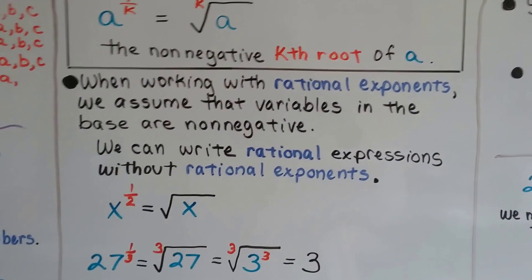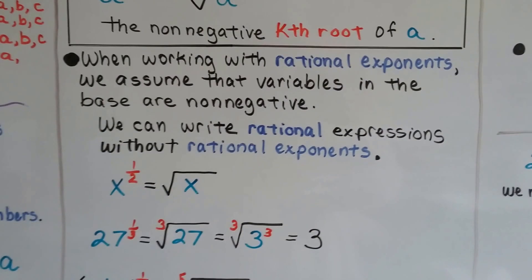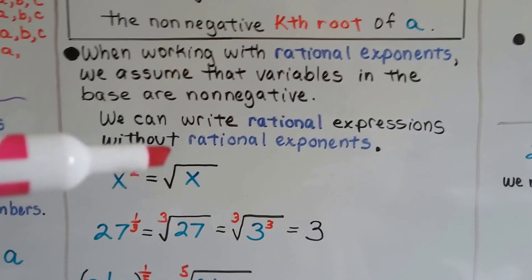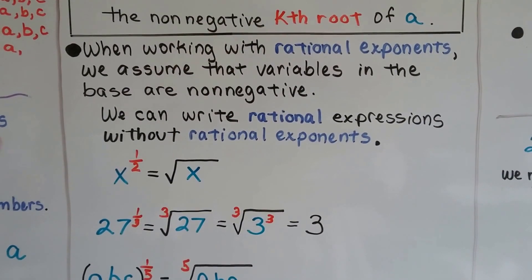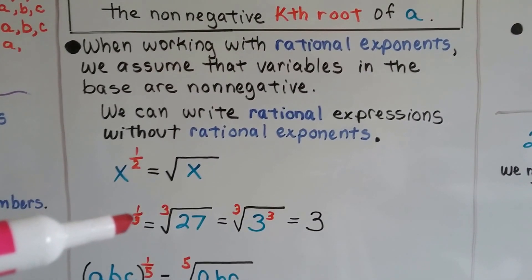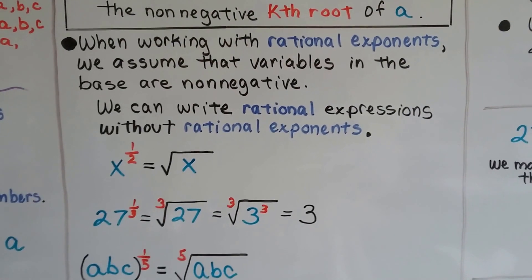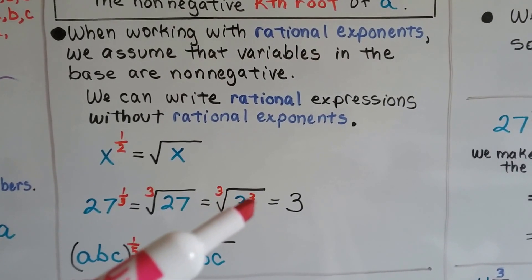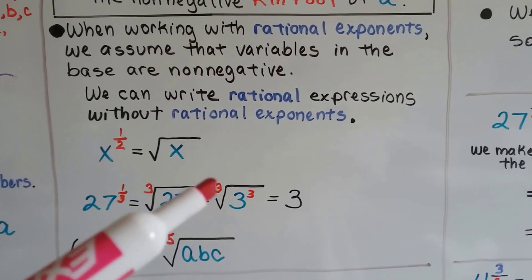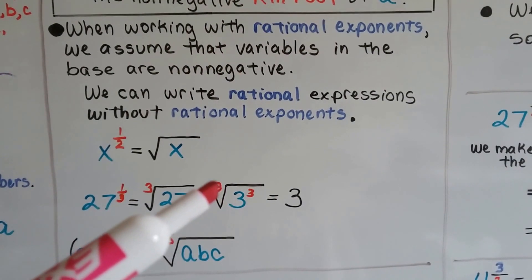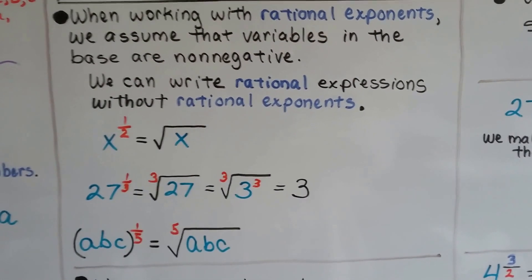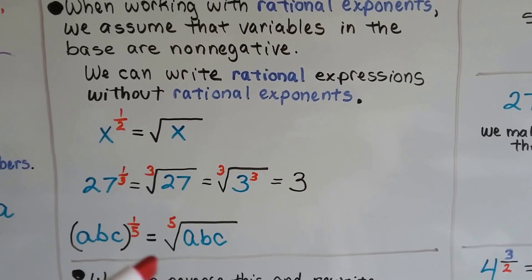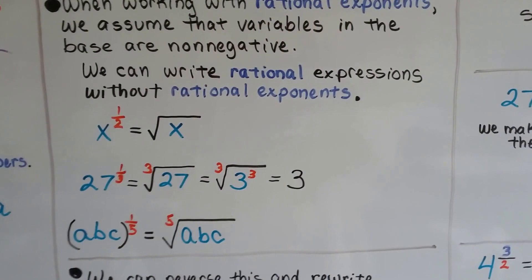We can write rational expressions without the rational exponents. If we have x to the half power, we can say it's the square root of x. If we have 27 to a one-third power, it's the cube root of 27. 3 cubed, 3 times 3 is 9 times 3 is 27. If we have abc to the one-fifth power, that means we've got the fifth root of abc.